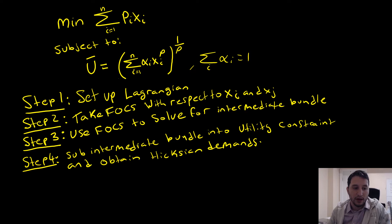So step number 1 is that we're going to set up our Lagrangian. We're then going to take our first order conditions with respect to xi and xj. We're then going to use our first order conditions to solve for our intermediate bundle. Step number 4 is that we're going to use this intermediate bundle xi hat and sub it into our utility constraint to obtain our Hicksian demands.